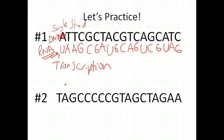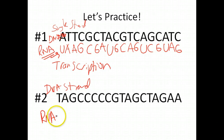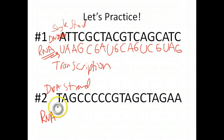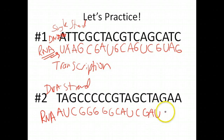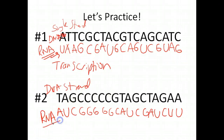Go ahead and pause this video and take a crack at converting this second DNA strand into RNA. Once you're done, unpause it to get the answer. It's a little tricky — you want to put T's where there are A's because that's what you're used to in DNA replication, but because we're doing transcription and making RNA, whenever you see an A you put a U, because T's don't exist. We'll practice this again in class.